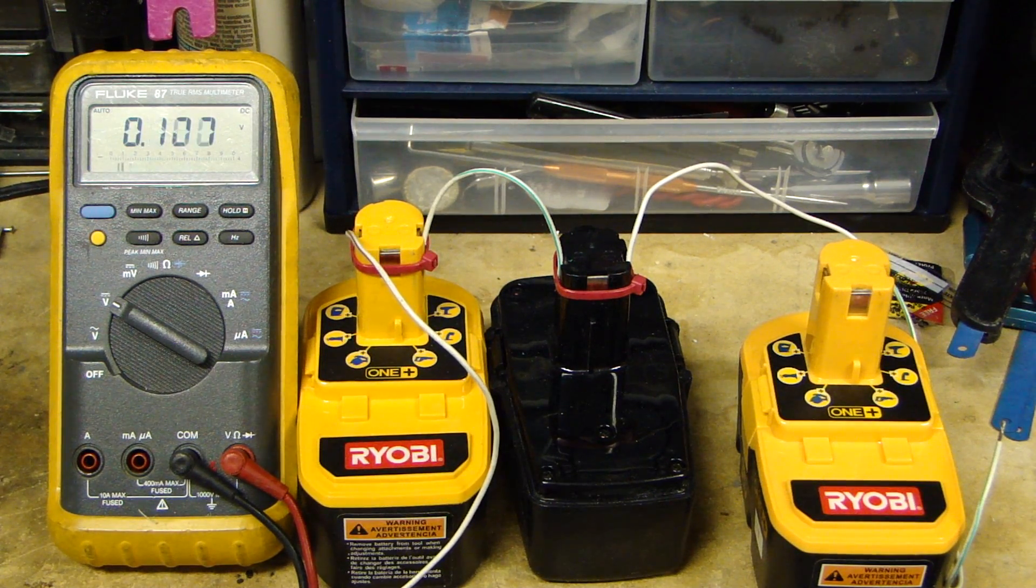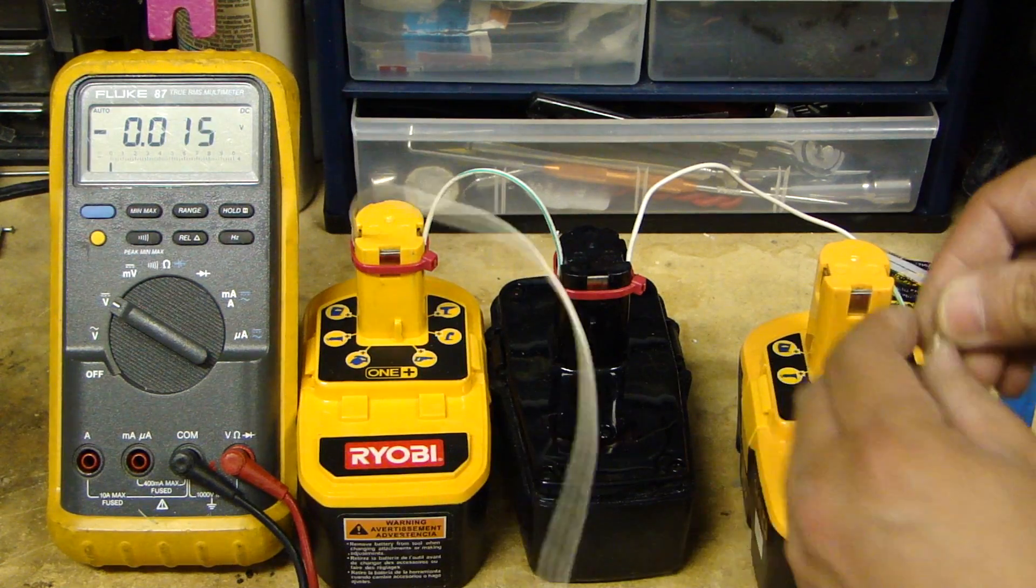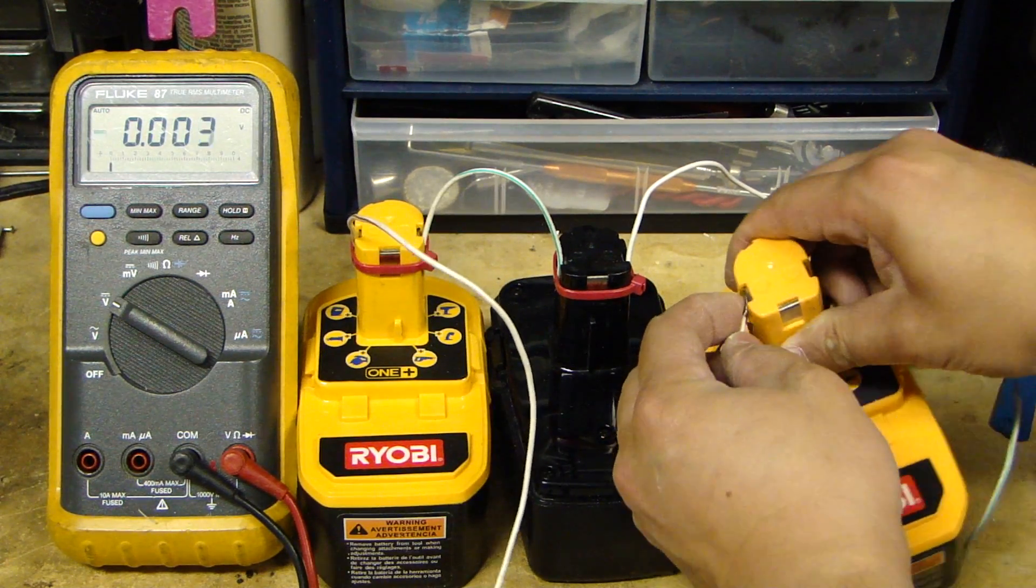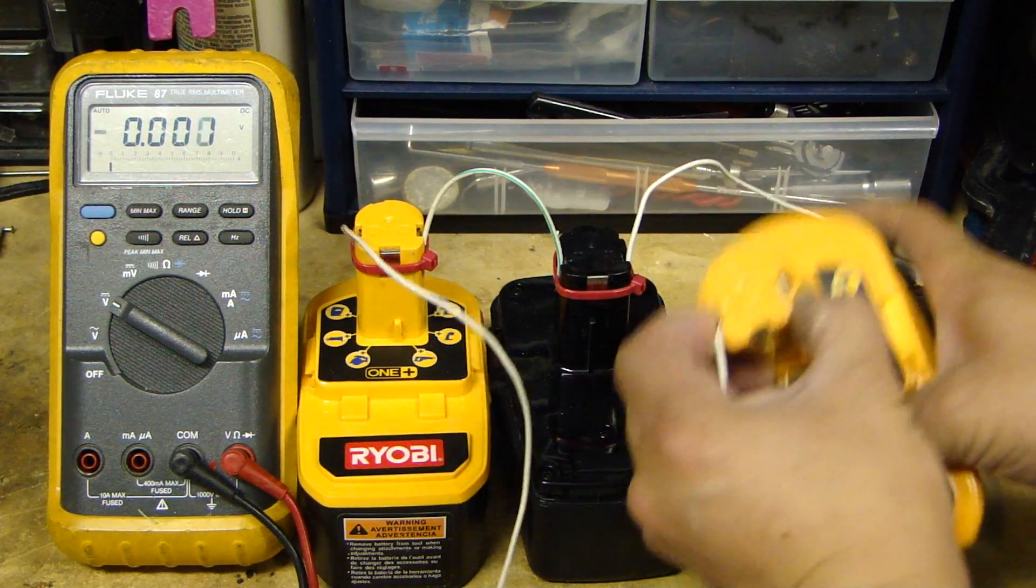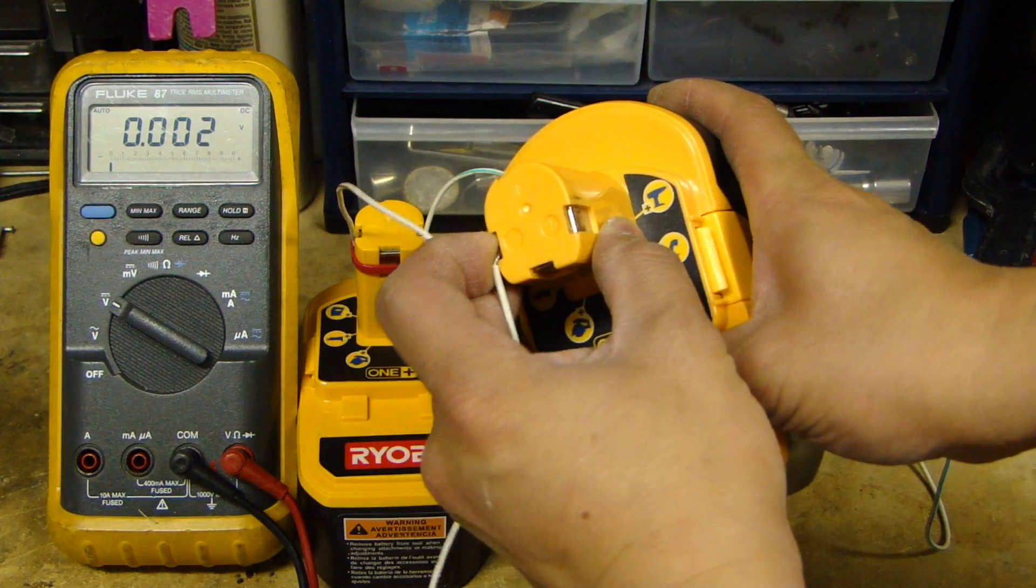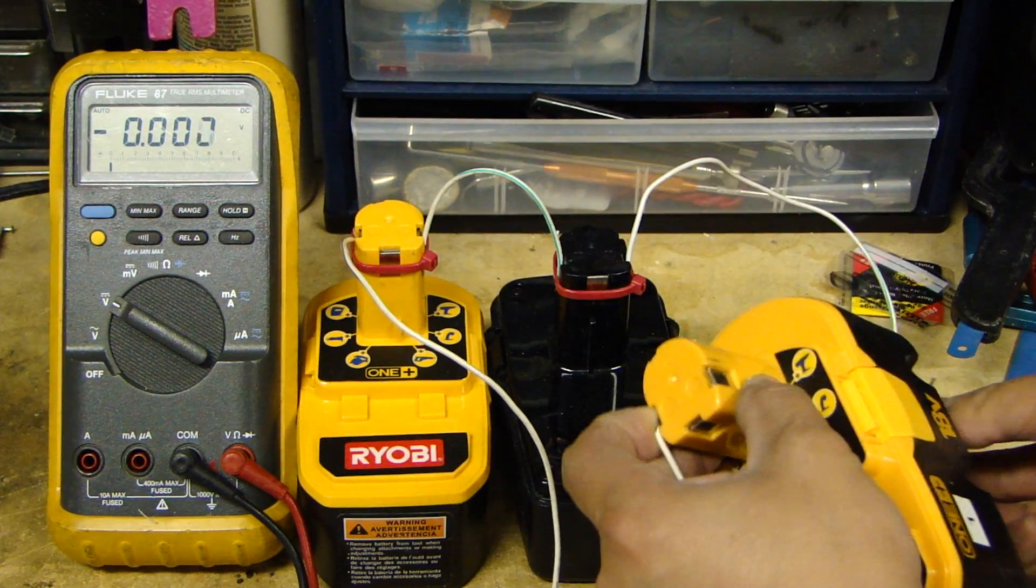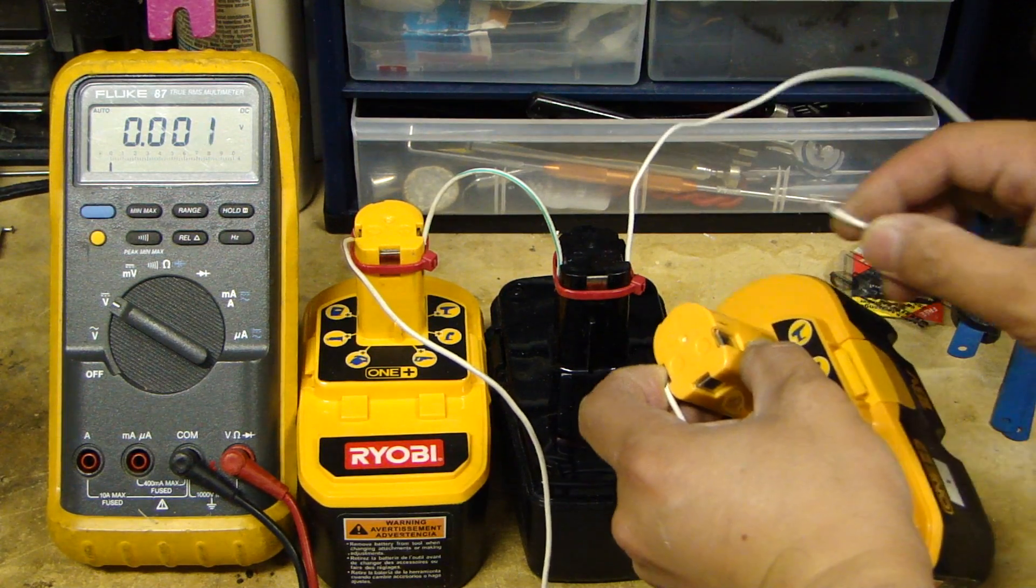Now I'm going to connect the negative side. Here's the negative side. I'm going to hold it to the negative of the Ryobi battery that is bad. And I'm going to show you what you want to do.